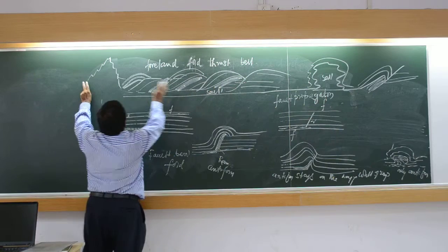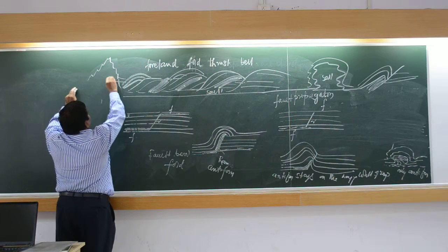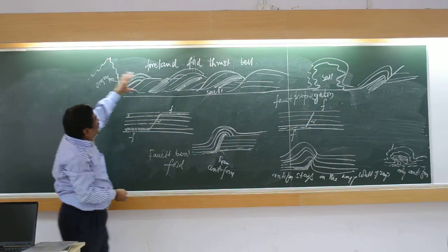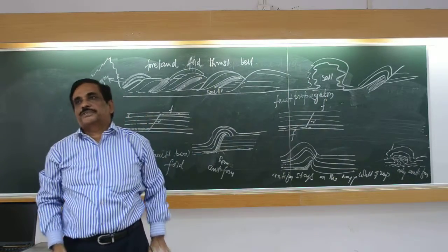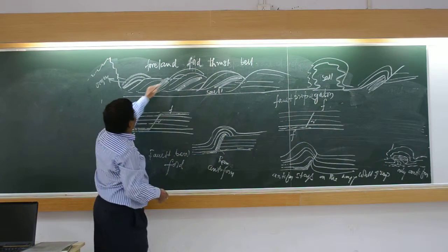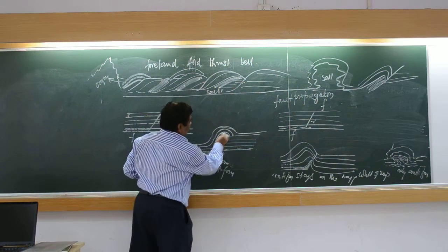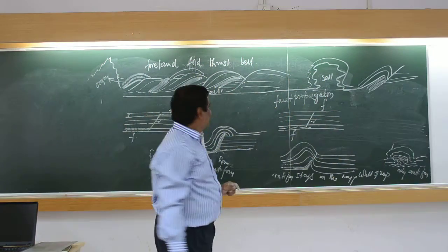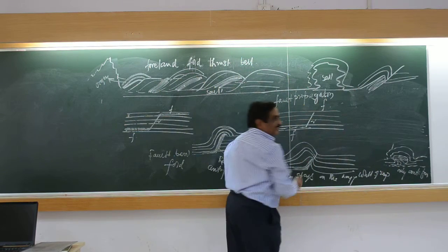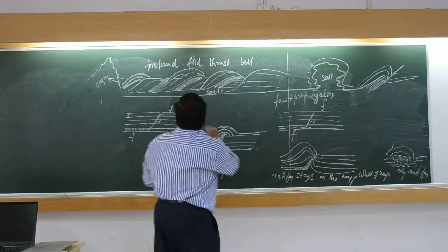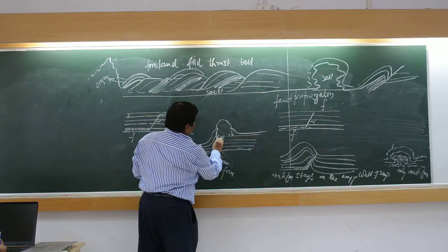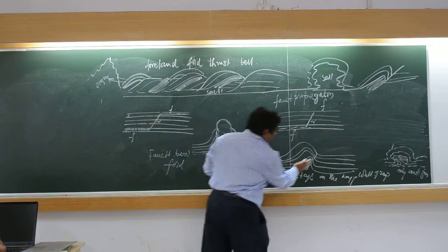Now so, these structures, these deformational structures combine with the orogen. Earlier you were saying orogen having the thrusts, now the foreland part is also having thrusts, folds, all those things. So, salt bed is going like this, see, salt bed is going like this. Now you see, when the salt rises like this, they become explosive.